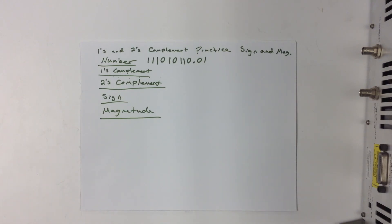I'd like to go over some basic principles in 1's and 2's complement, and then the sign and magnitude representation of numbers. At the top there I have an unsigned binary number.